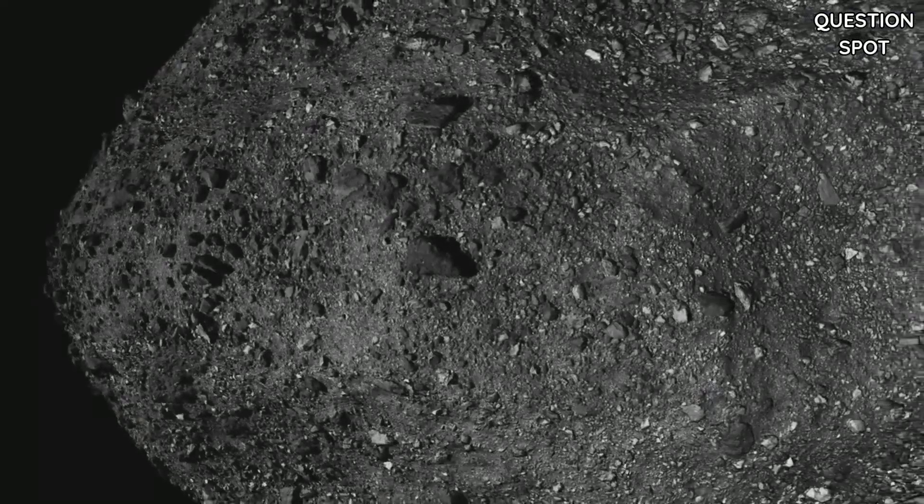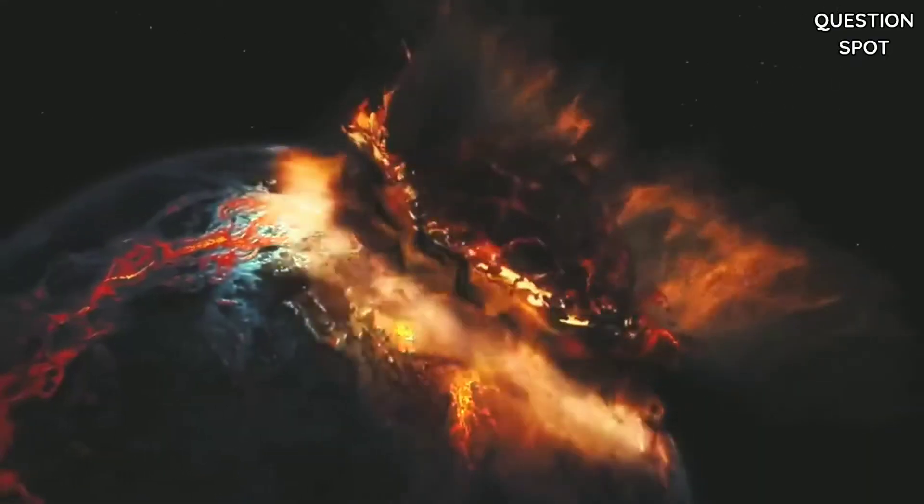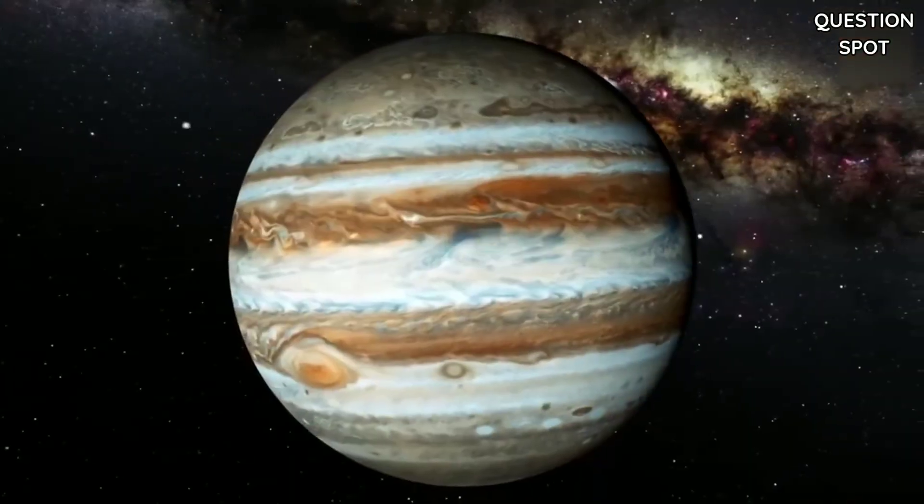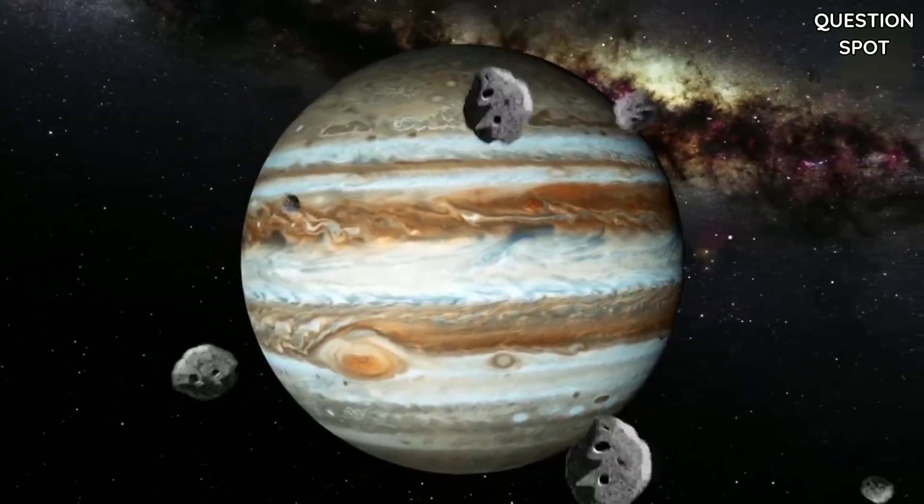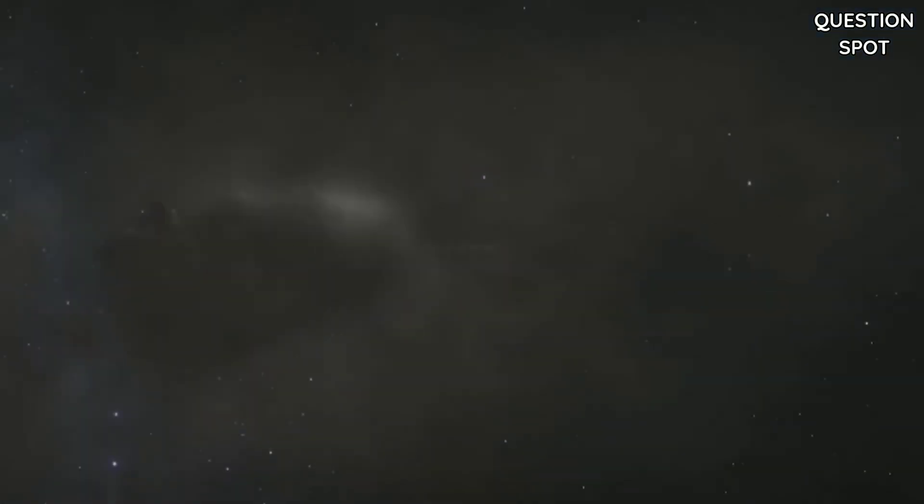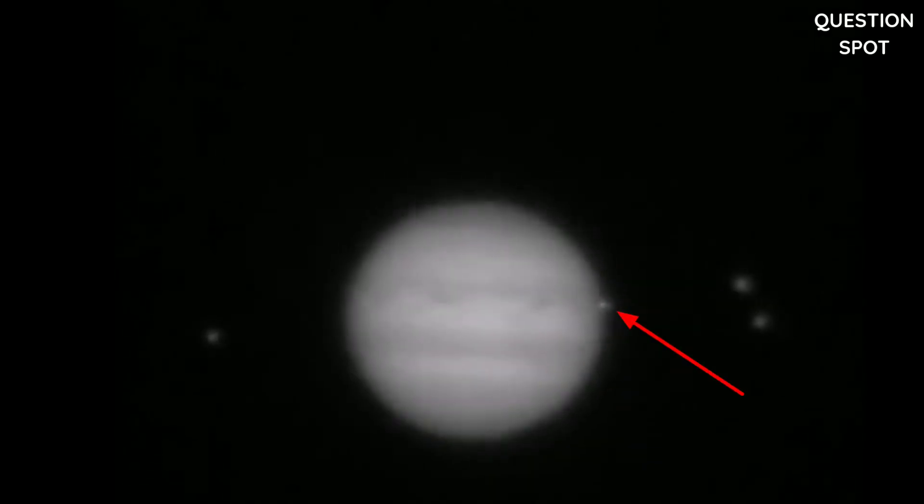In the last decade, Jupiter has been hit by five comets and asteroids. On the 17th of March 2016, images of Jupiter were captured being hit by asteroids.